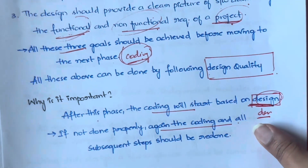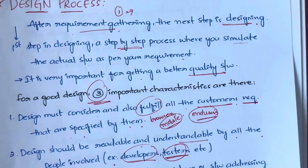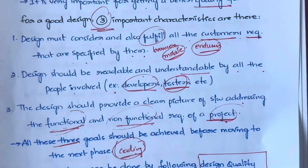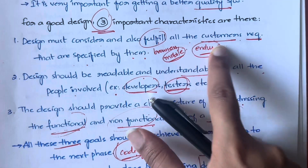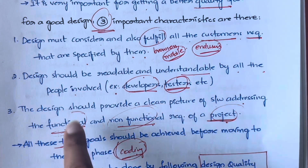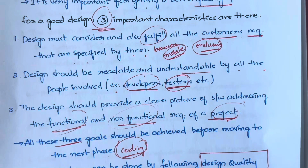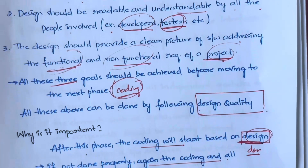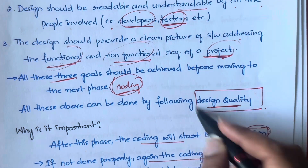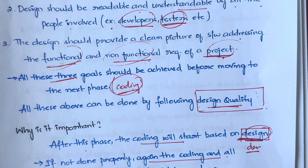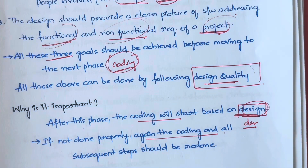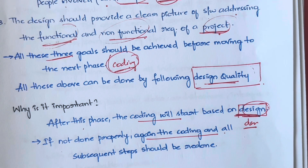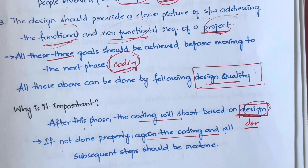To recap: design is the next step after gathering requirements. While creating a design for any software, keep three things in mind — it has to fulfill all customer requirements, it should be readable and understandable by both developers and testers, and it has to include all functional and non-functional requirements. You can achieve all these by following the principles of design quality, which we will cover in the next video. Feel free to leave any questions or video recommendations in the comments, and thanks for watching.